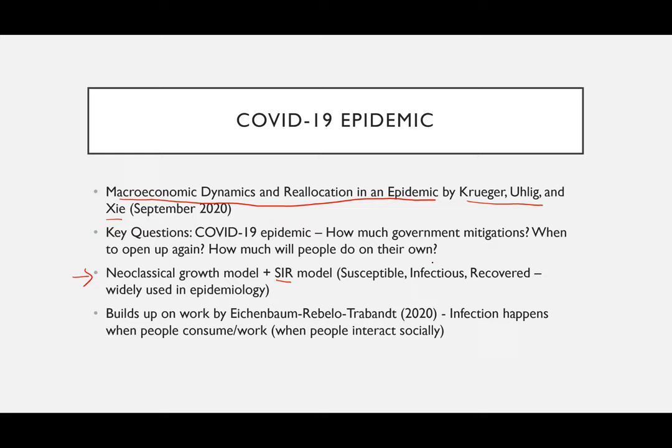This paper builds on work by Eichenbaum, Rebello, and Trabant, which was another paper published in 2020. In both these papers, the idea is that infections basically happen when people work or consume outside — that is, when people interact socially.